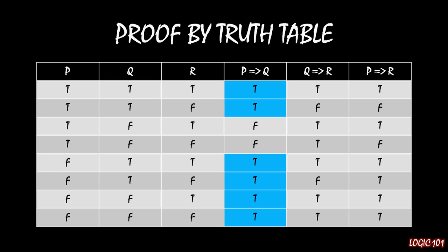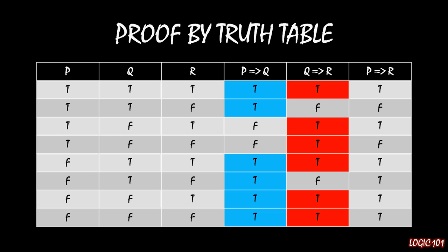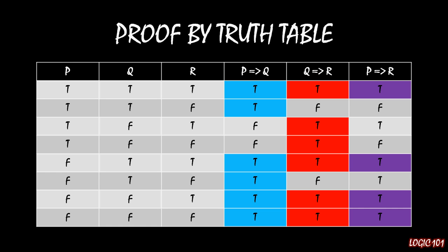Column 5, Q implies R, is true wherever Q is true and R is true, or whenever Q is false regardless of R. Now what we're curious about is in those four rows where both P implies Q and Q implies R are true — rows 1, 5, 7, and 8 — is it also true that P implies R? And yes, that is the case. P implies R is true in those four instances, which is why if we know P implies Q and Q implies R are both true, it must also be true that P implies R.